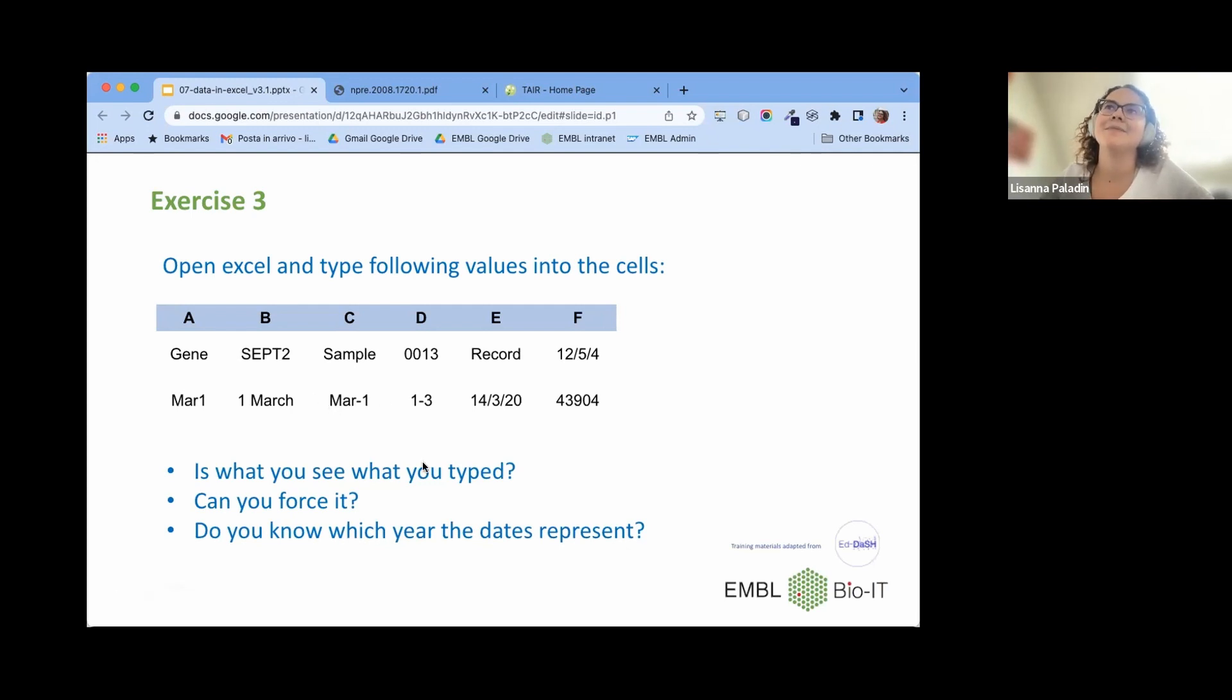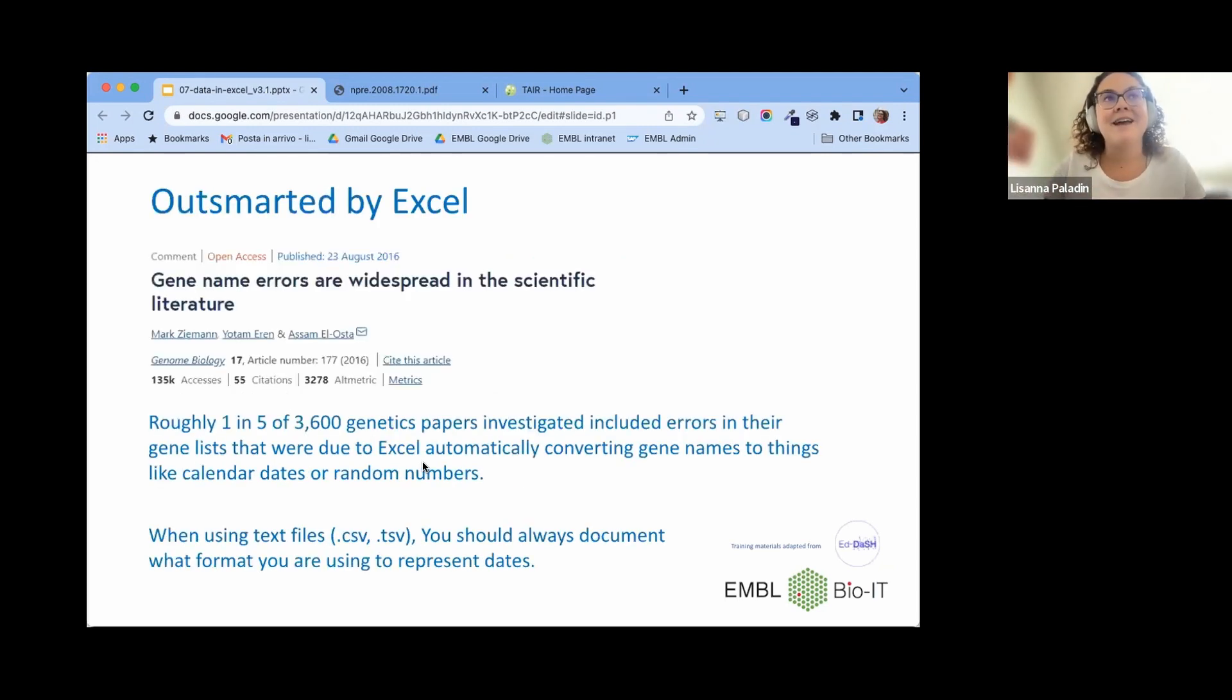Since they are usually assembled with a word or the start of a word and a number, they often end up being interpreted as dates because maybe the start of the words is the start of a month and the number then is interpreted as the day of the month. This was actually a scientific case some years ago when this study identified that one in five of the more than 3000 genetics papers that were investigated included errors in their data tables due to the fact that Excel converted gene names into calendar dates or random numbers. This is not something that doesn't happen. This is something that happens often.